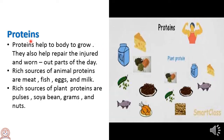Next is proteins. Our muscles, organs, and even blood are made up of proteins. Our body needs proteins for muscle building and repairing worn-out tissues. Rich sources of animal proteins are meat, fish, eggs, and milk. Rich sources of plant proteins are pulses, soya beans, grams, and nuts.